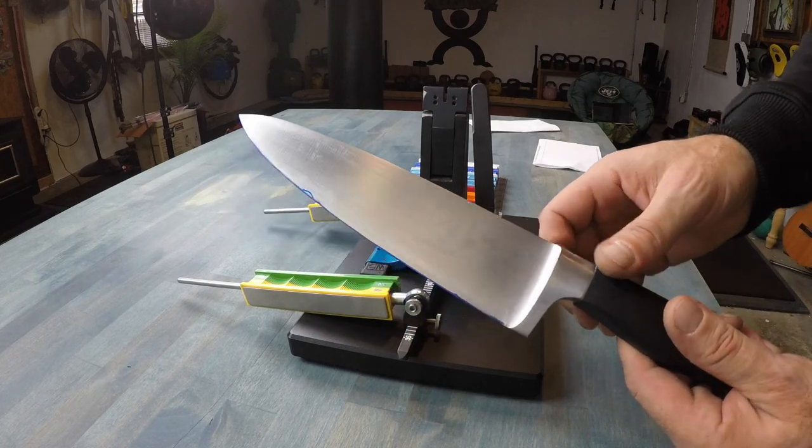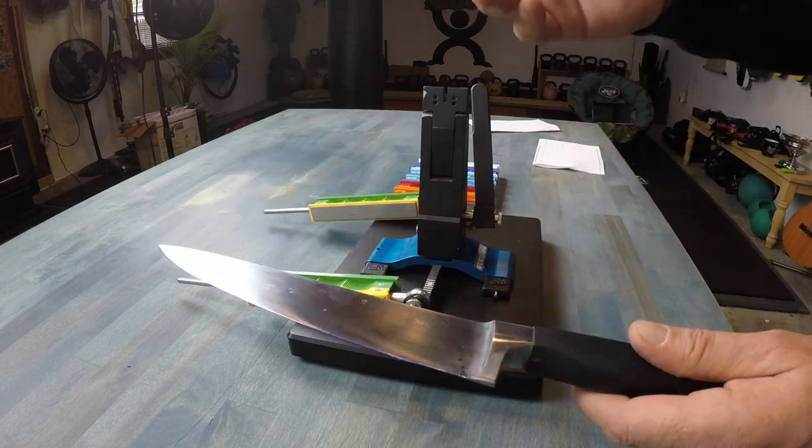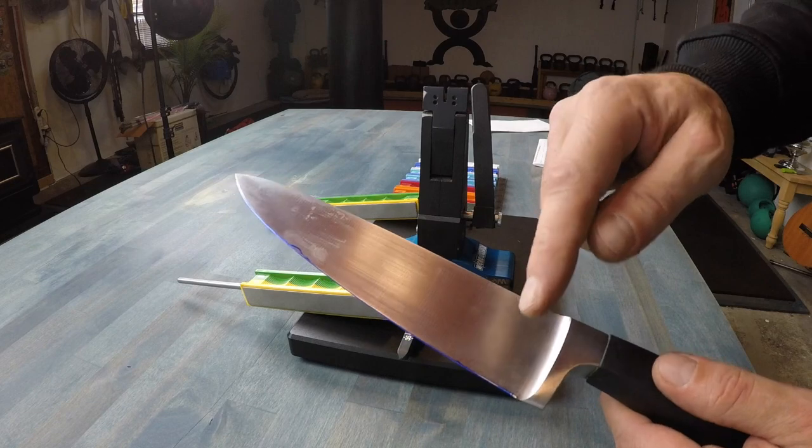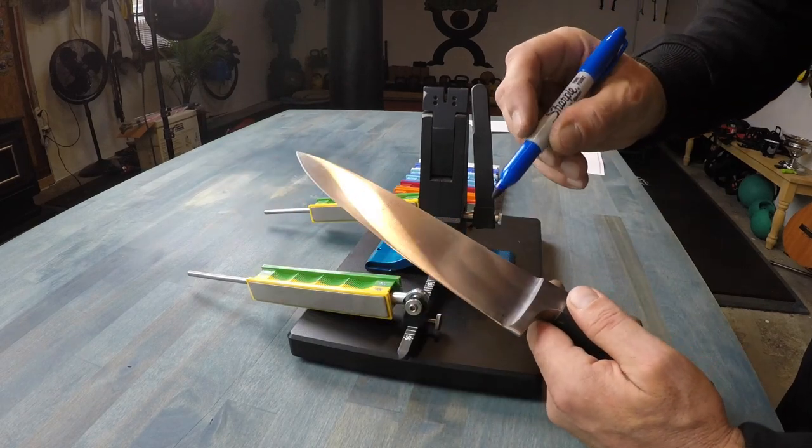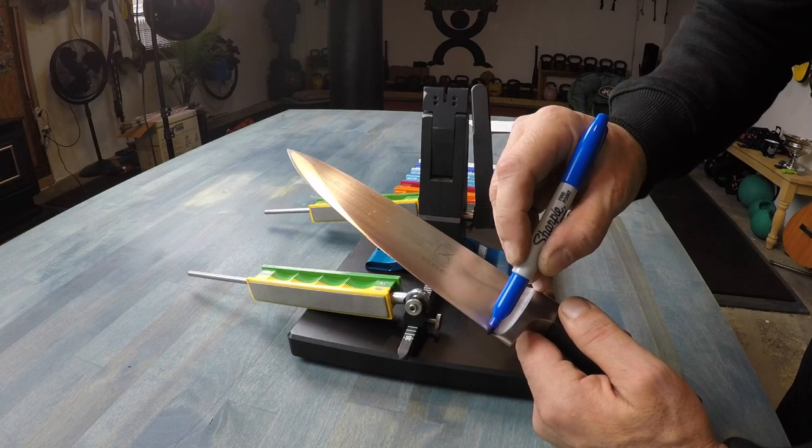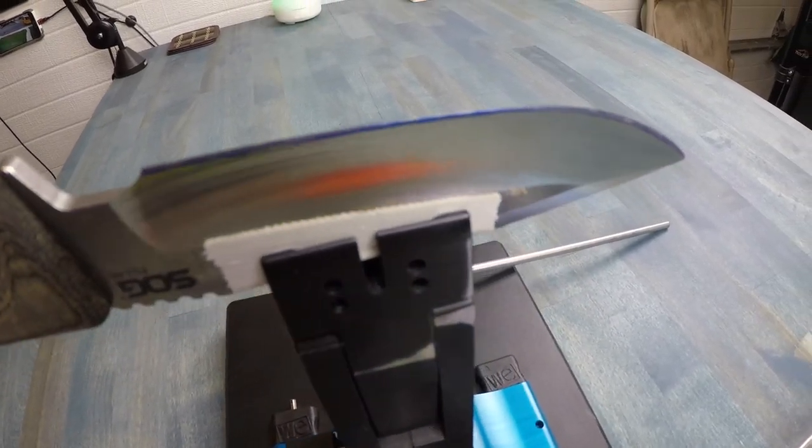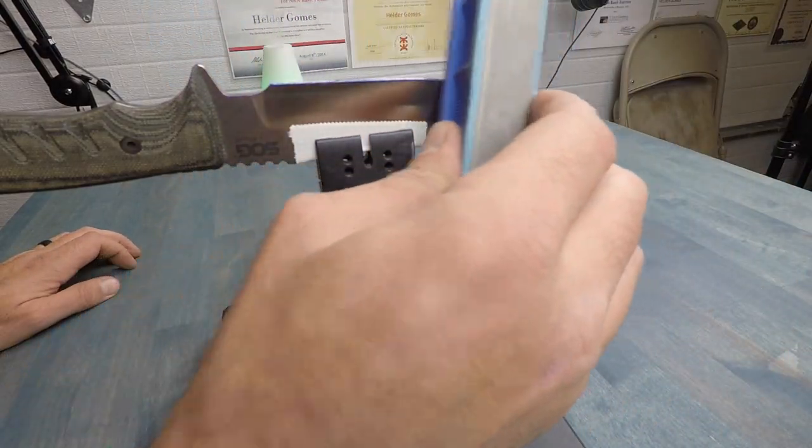One thing that I do want you to keep in mind is a little trick as far as finding the actual angle that you're going to set it to. There's a lot of guidelines out there but a cool little trick that I learned from Wicked Edge was to go ahead and just utilize a Sharpie or a marker and basically on the edge itself just color it in that line or that edge with the marker.